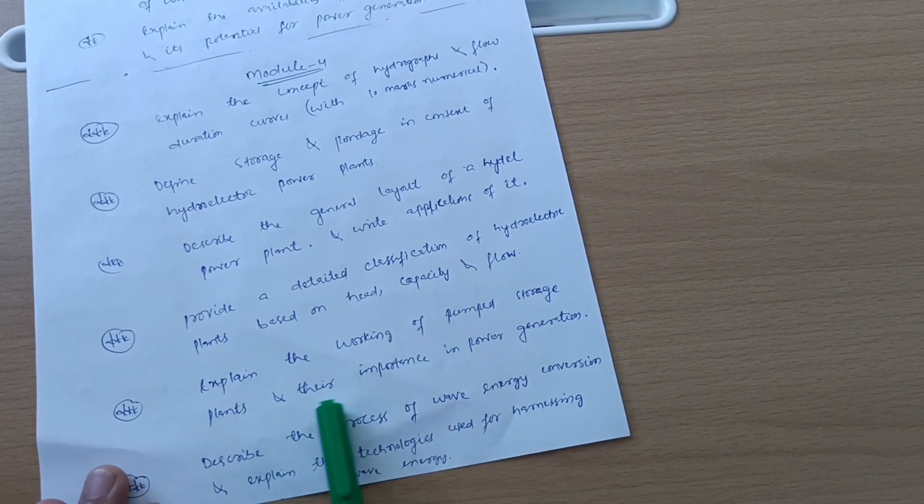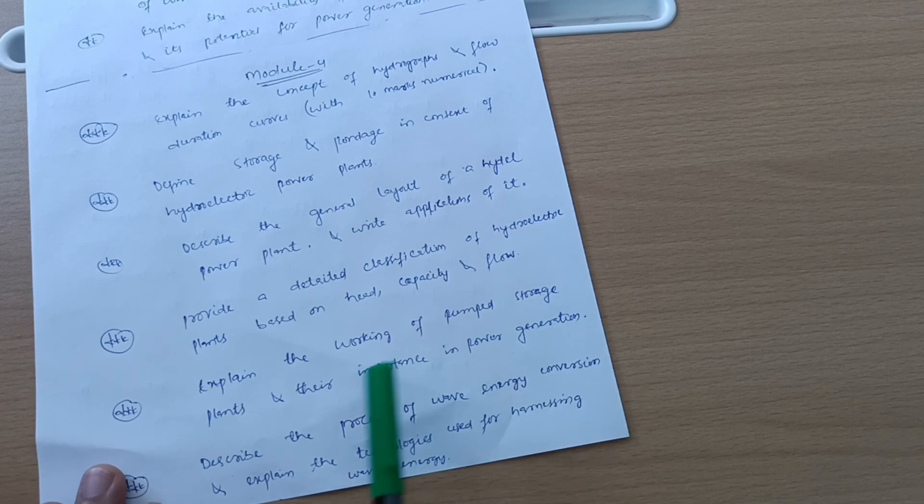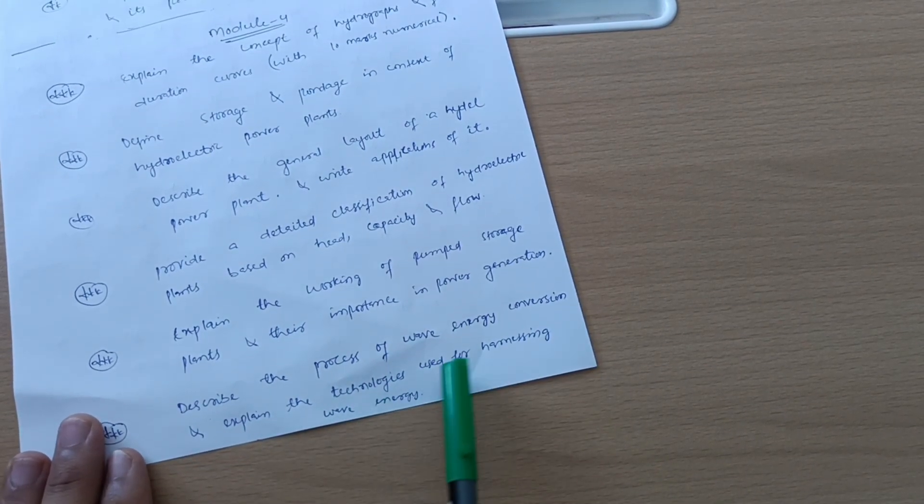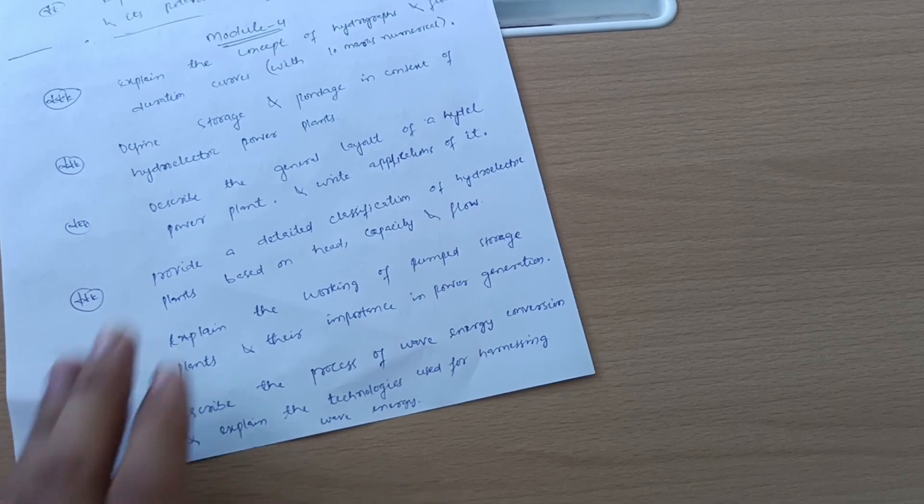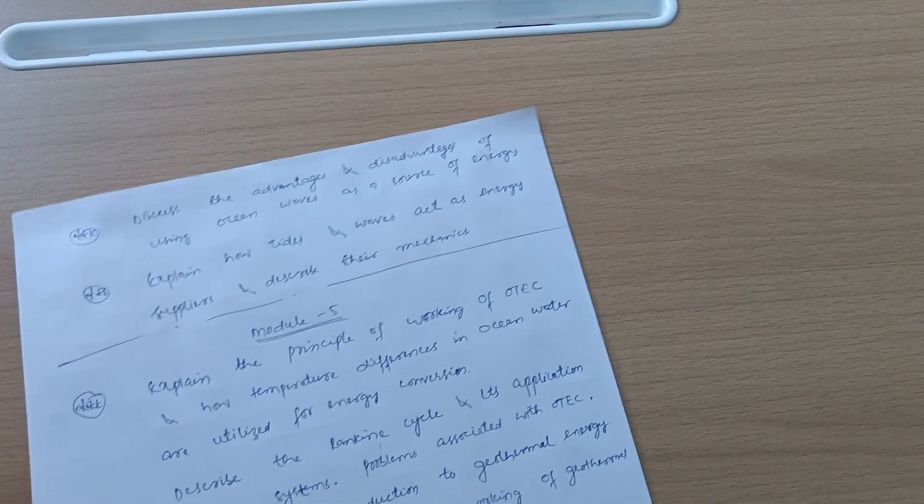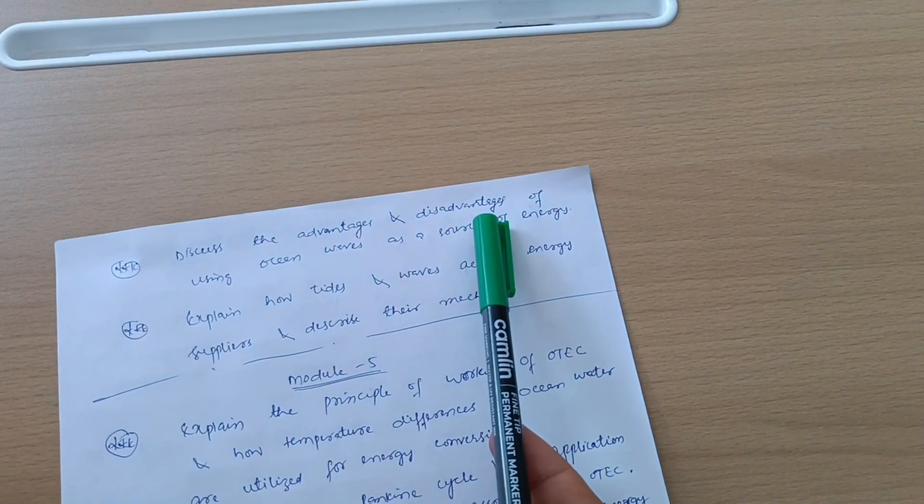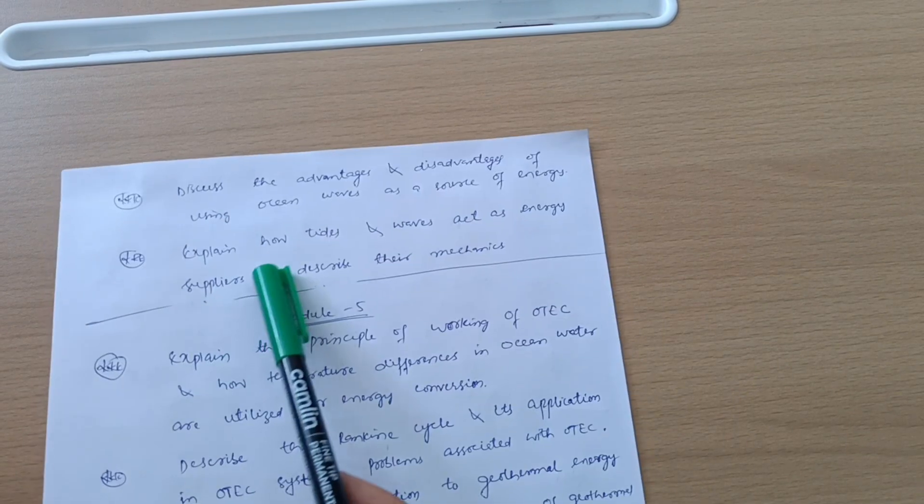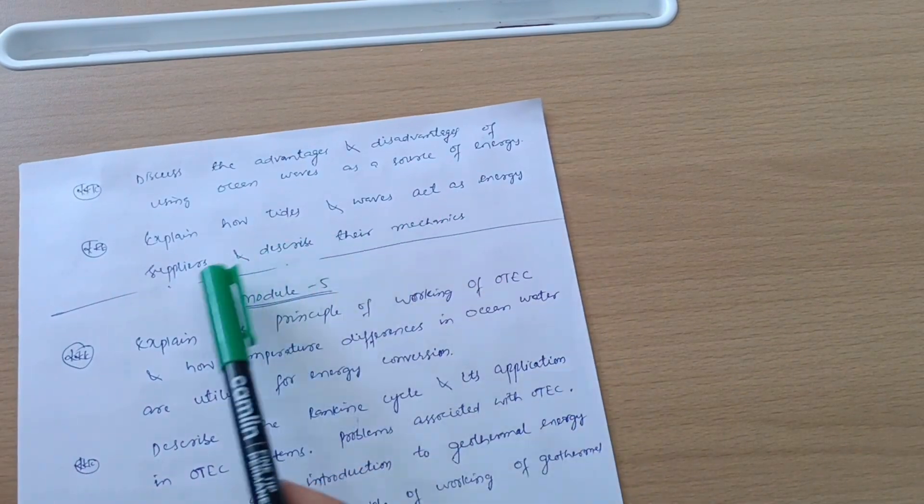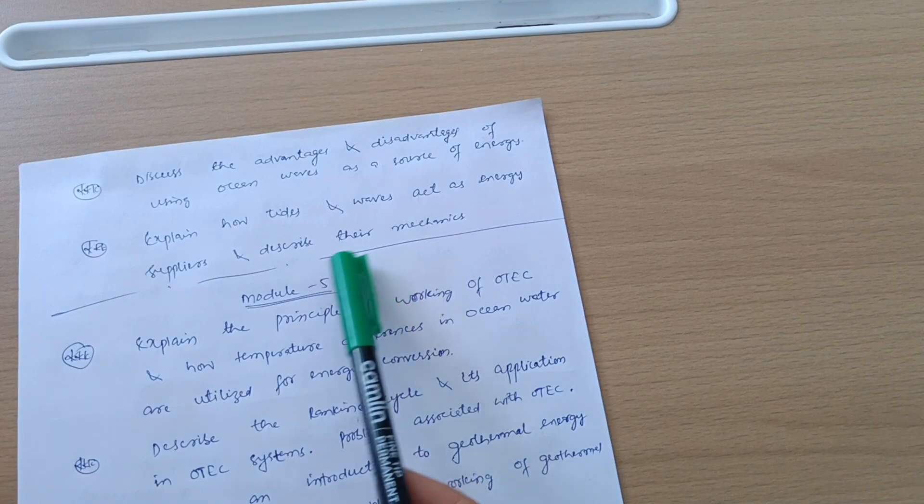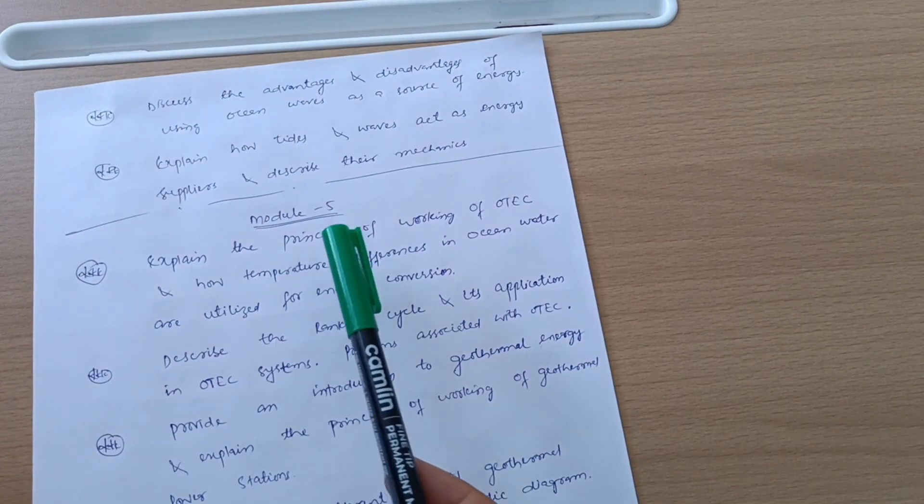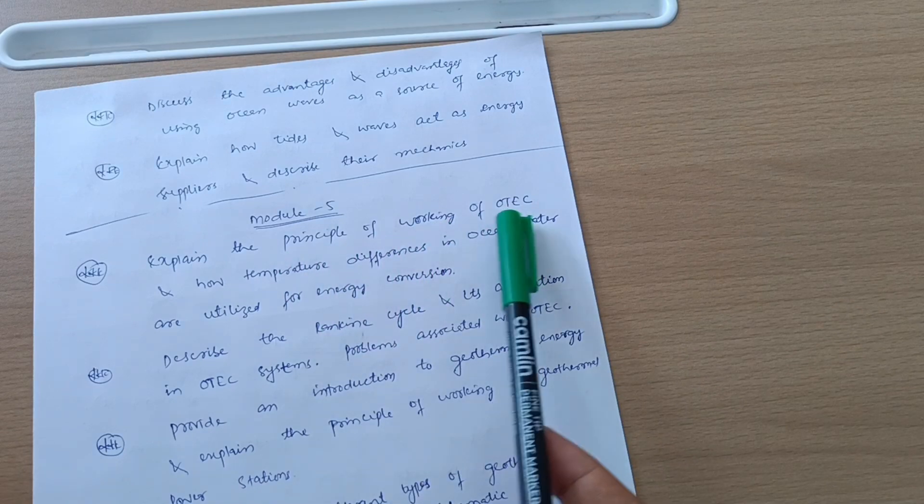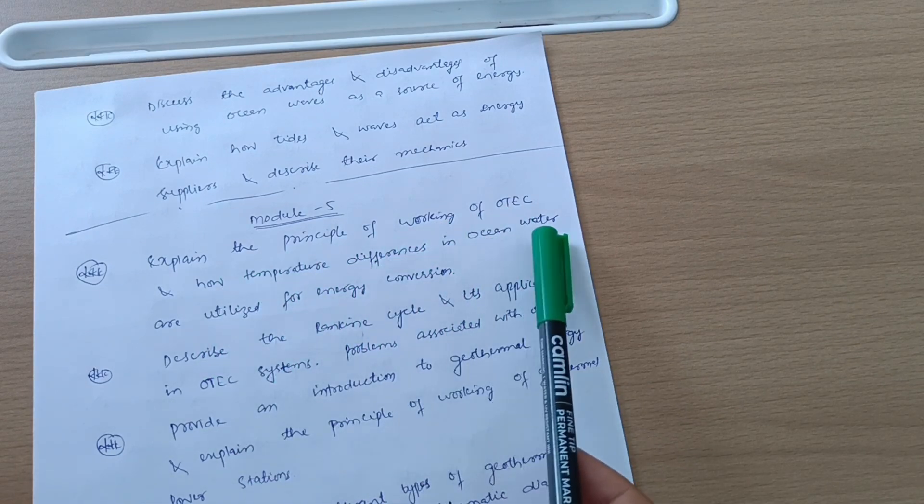Explain the working of pumped storage plants and their importance in power generation. Describe the process of wave energy conversion and explain the technologies used for harnessing wave energy. Discuss the advantages and disadvantages of using ocean waves as a source of energy. Explain how tides and waves act as energy suppliers and describe their mechanics.